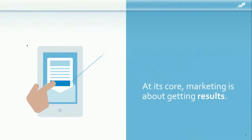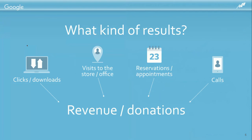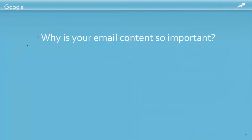What we're here to talk about is content. At its core, marketing is about getting real results — you're trying to elicit a physical response. That might be clicks and downloads, visits, reservations or appointments, or calls into your business, all of which should generate revenue, donations, or interest. Content is the currency of the entire web. The content on your website is what tells Google how to rank you — if you don't have content on specific keywords, there's no way you're going to show up.